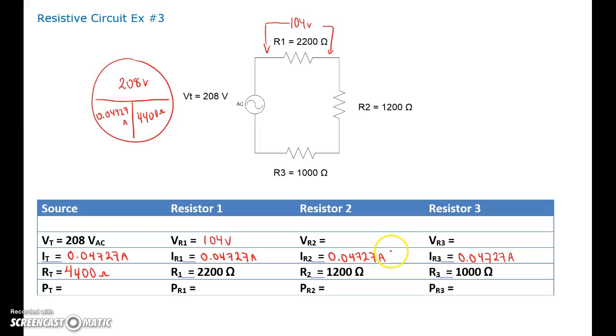Next one, if we take this current value times 1200, we're going to get a voltage of 56.72 volts. Beauty.